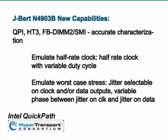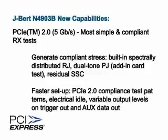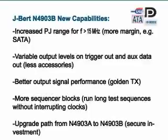Here is an overview of Jaybird's major new capabilities. For new forwarded clock devices, Jaybird offers the most accurate characterization because it helps you emulate half-rate clocks and add stress conditions to both the clock and data signals. For PCI Express Generation 2, it provides the most integrated and simple measurement setup for compliance testing of receivers — you can generate all the compliance stress conditions with the Jaybird, and its built-in compliance patterns, electrical idle state, and variable output levels on all supplementary outputs reduce setup time significantly.